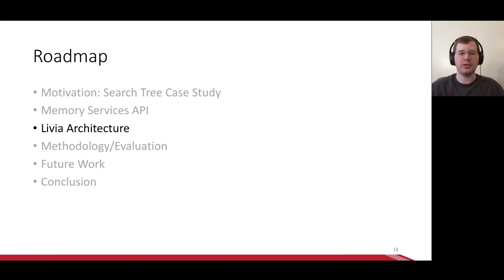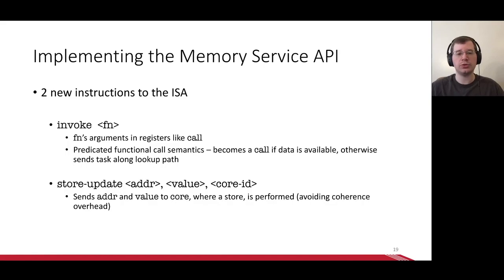Now let's look at how we implement the memory service API with the Livia architecture. We introduce two new instructions. The first is invoke. Invoke looks a lot like a call. It takes a function and you place the function's arguments in registers. Invoke actually has predicated function call semantics. If data is available locally, invoke becomes a call and execution proceeds. Otherwise, the system marshals the task pointer and arguments and sends them to be executed near data.